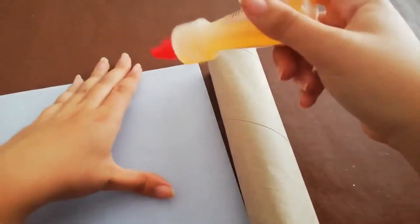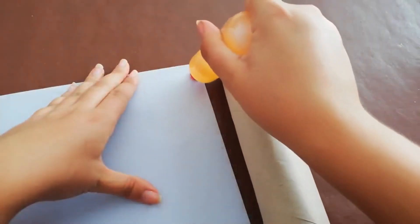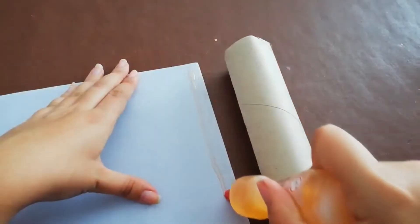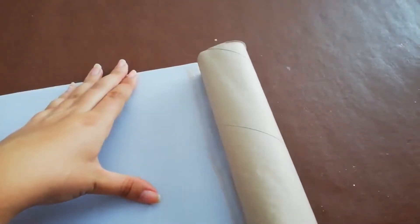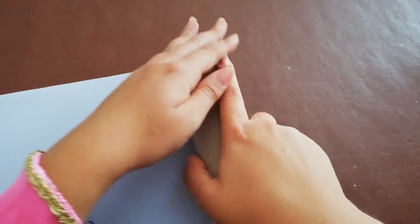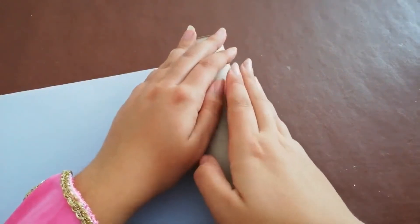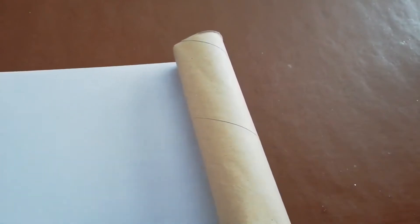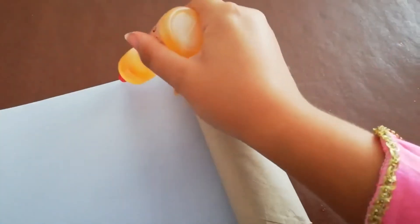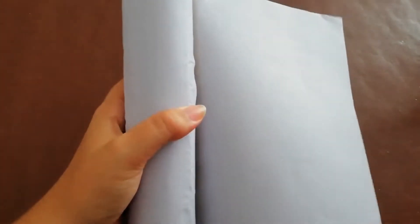I'm going to put some glue along the edge here, like that, and stick it to my kitchen roll or toilet rolls. And then I'm going to put another strip along, and I'm just going to glue it until the paper is secure. So now I've glued my paper to the kitchen roll.